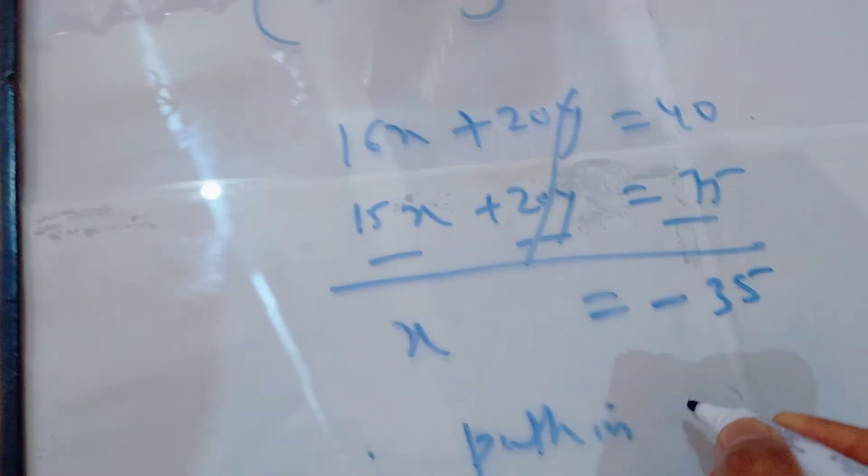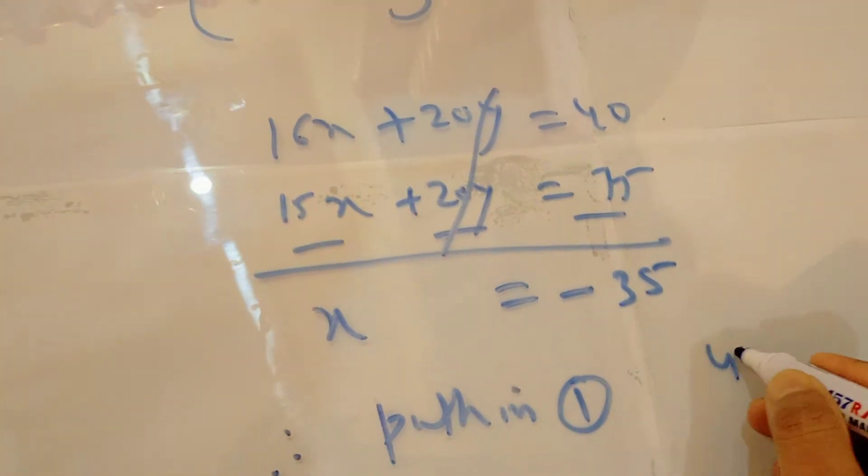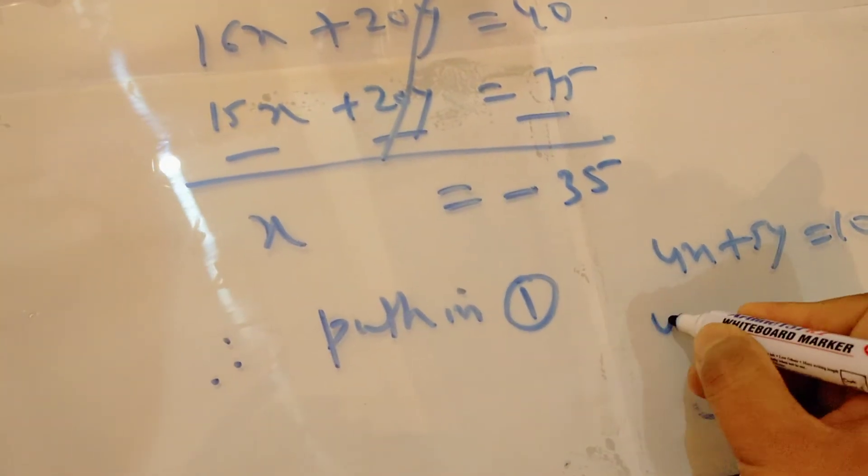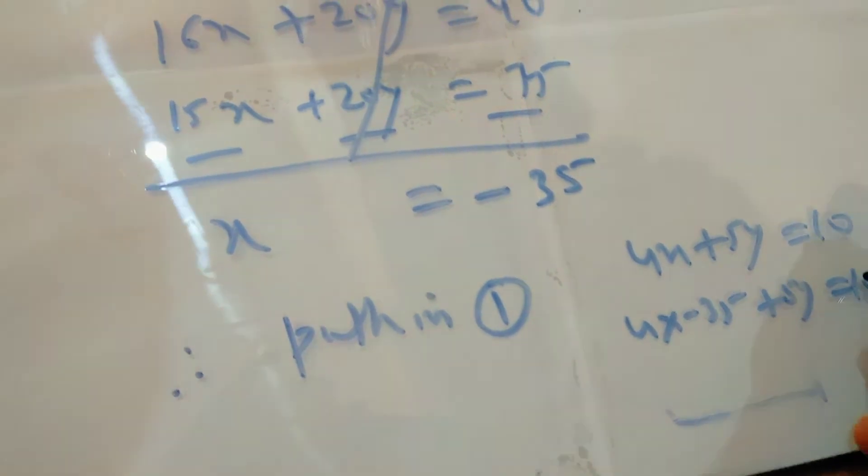Therefore, putting in the first equation: 4x plus 5y equals 10. So here 4 into minus 35 plus 5y equals 10. So it will give the result...